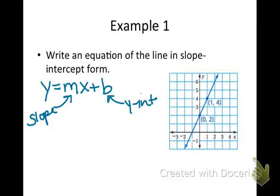Remember, this is the ordered pair (0, B), or where the y-coordinate is B. We can see that right here visually. So B is equal to a positive 2.